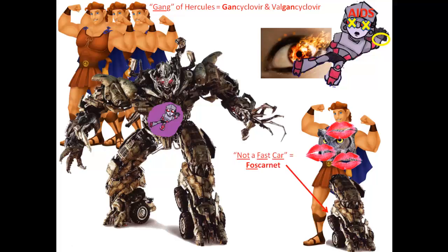The next two drugs do not depend on the viral kinase. Foscarnet — just remember that even though Hercules got transplanted some wheels on his leg, it doesn't mean he's a fast car. The 'phos' is underlined to remind you of phosphate, because this drug binds to the pyrophosphate binding site on DNA polymerase. Foscarnet is administered by IV. Another drug administered by IV that also does not depend on the viral kinase is Cidofovir — remember that by linking Cytomegalovirus and Cidofovir.